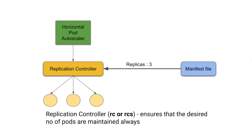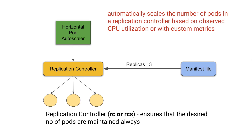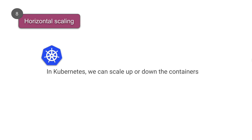The horizontal pod autoscaler monitors CPU utilization and, based on those metrics, sends a message to the replication controller to set the required number of pods. There is a controller manager in the horizontal pod autoscaler that loops every 15 seconds by default — this interval can be changed. It continuously monitors CPU utilization and signals the replication controller to maintain the appropriate number of pods.